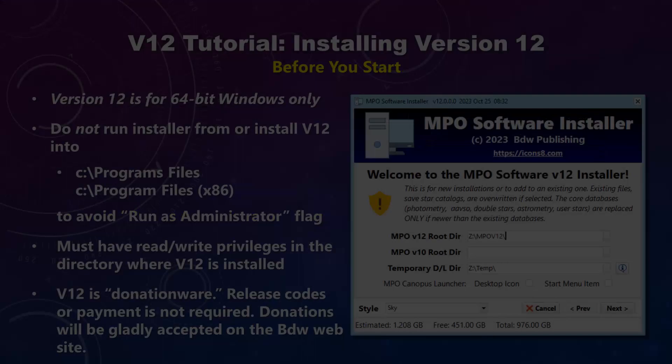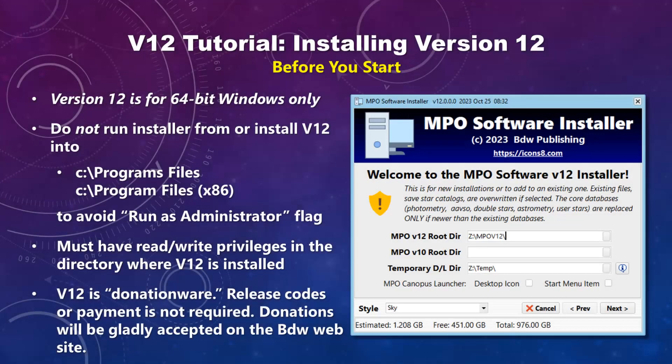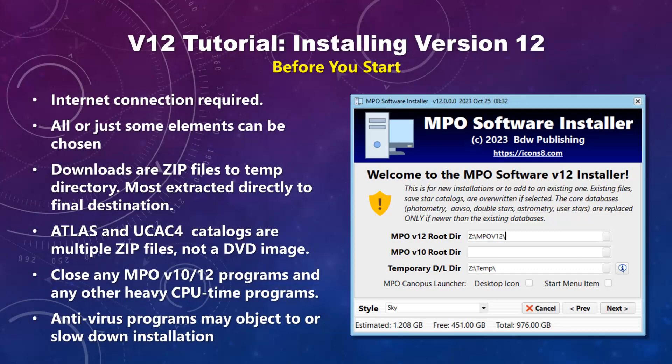Version 12 programs are for 64-bit Windows only. You should not need administrator rights as long as you avoid the two Program Files directories often expected by Windows. The main consideration is that you have read/write privileges for the directory where version 12 will be installed.